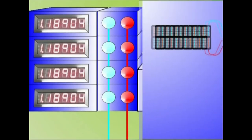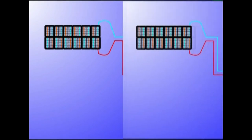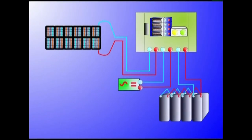Serian daudenek etengailuen antzera lan egiten dute. Hau da, metagailuak beteta daudenean, korrontearen bidea eten egiten dute. Paraleloan daudenek aldiz, korrontea beste erresistentzia batera desbideratzen dute.